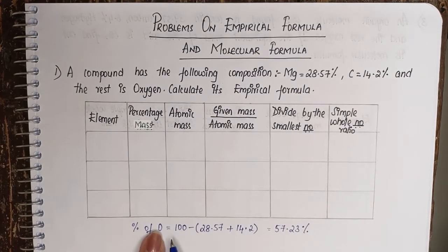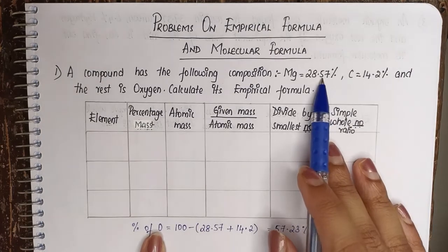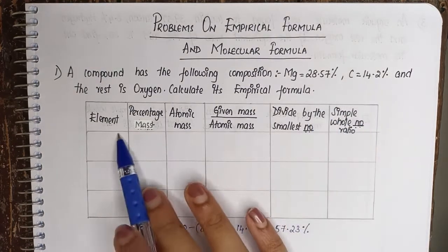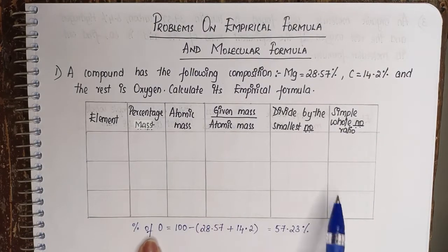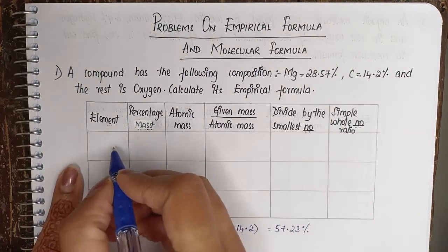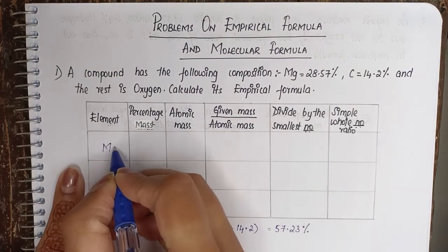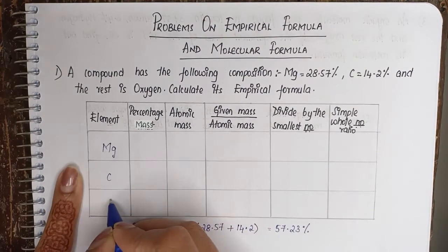So now we know the percentage of oxygen, magnesium, and carbon. Let's fill up the table and try to see what ratio we are getting. We have three elements here: magnesium, carbon, and oxygen.